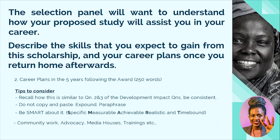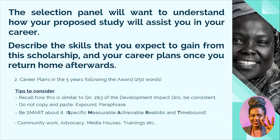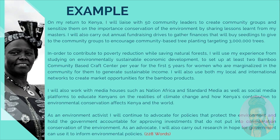Before we look at the example, this is a great time to pause and make your own bullet points on what you think you'll be able to do in the first five years after the award. Remember, this has to be specific, measurable, achievable, realistic, and time-bound. Pause here before we continue.